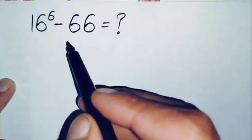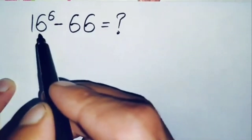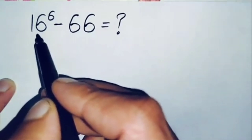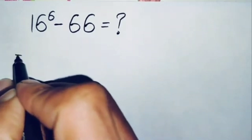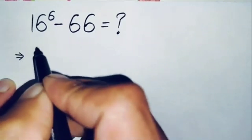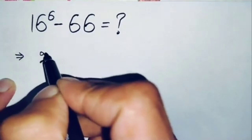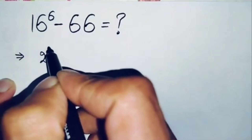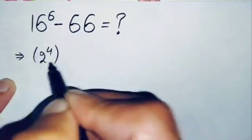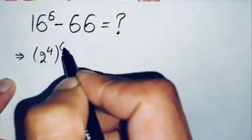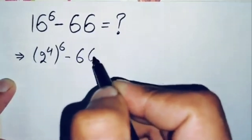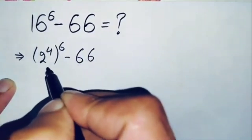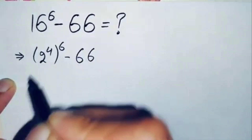So how can we solve this math problem? First of all we will change this base 16 to its exponential form. We can write 16 as 2 raised to power 4, so this will become 2 raised to power 4, whole raised to power 6, minus 66.